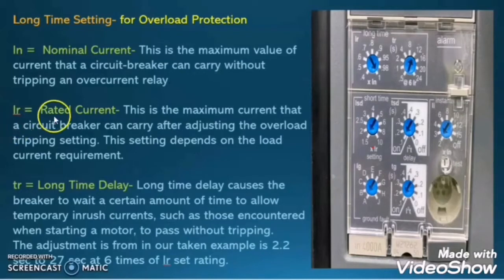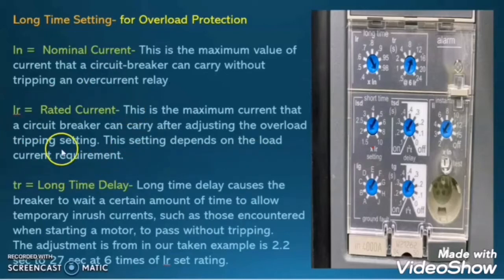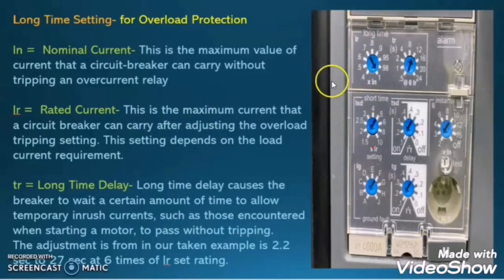What is IR? IR is the rated current. This is the maximum current that the circuit breaker can carry after adjusting the overload tripping setting, and this setting depends on the load current requirement. It means the maximum current that the circuit breaker can handle for normal operation when the overcurrent tripping setting is adjusted.